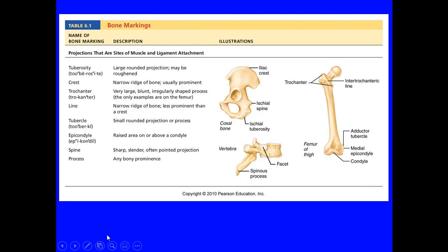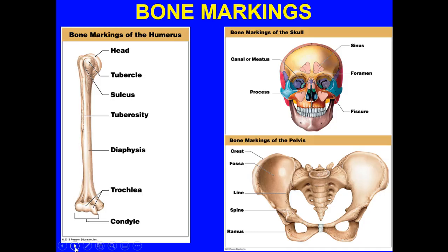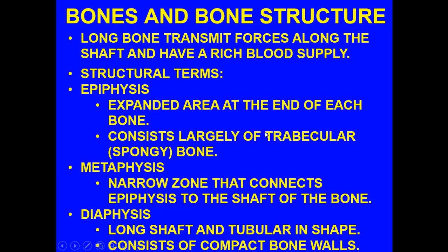Here's another good table — I got this from another text. I like this one because it breaks it down and gives more examples of bones so that you know what these are. You'll find this in table 6.1. This is not in your text — it's an additional tool to help you review the projections that help form joints, the depressions and openings, and bone markings of the humerus. You really need to know these before you continue.